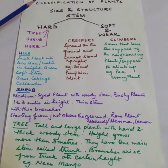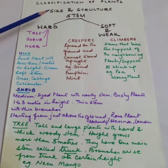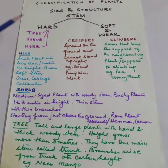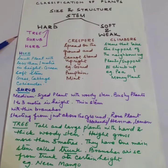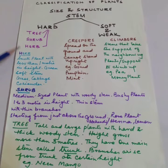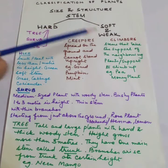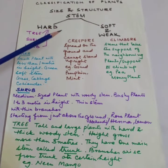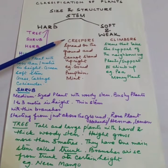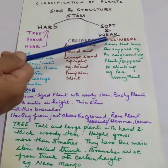Classification of plants can be done on the basis of the size and structure of the stem. If the stems are hard, they are classified into three groups: tree, shrub, and herb. And if the stems are soft and weak, they are classified into creepers and climbers.